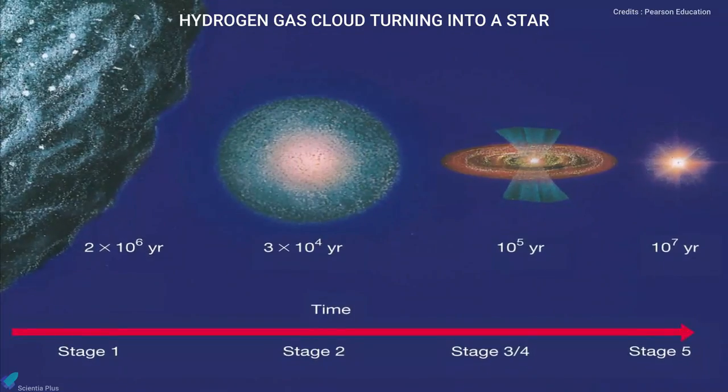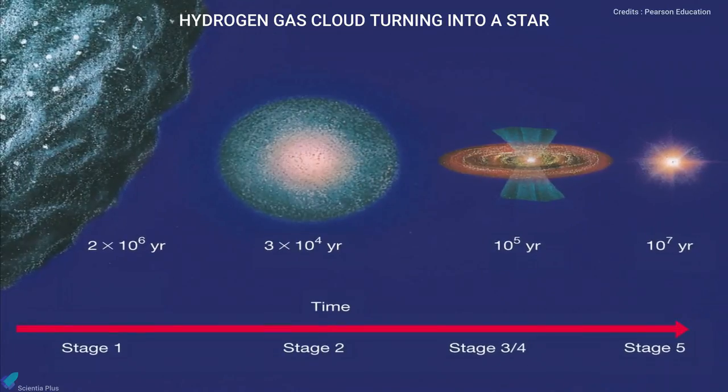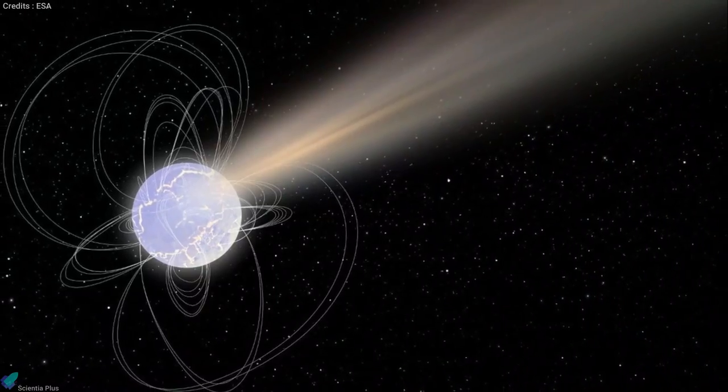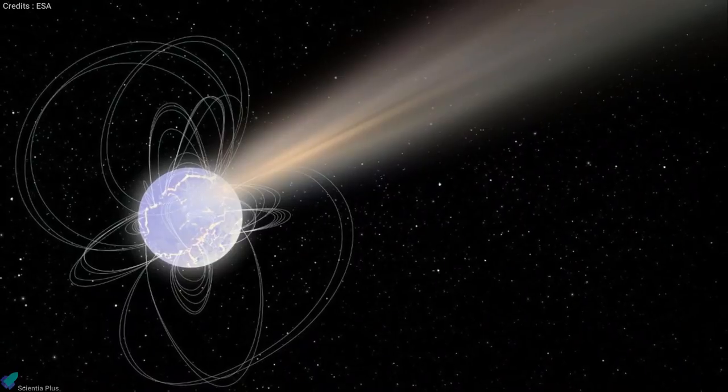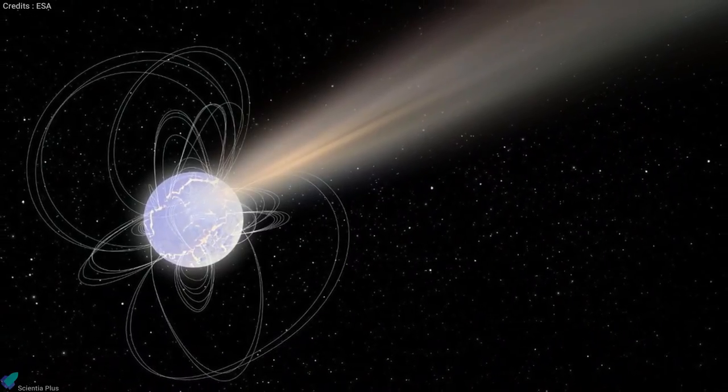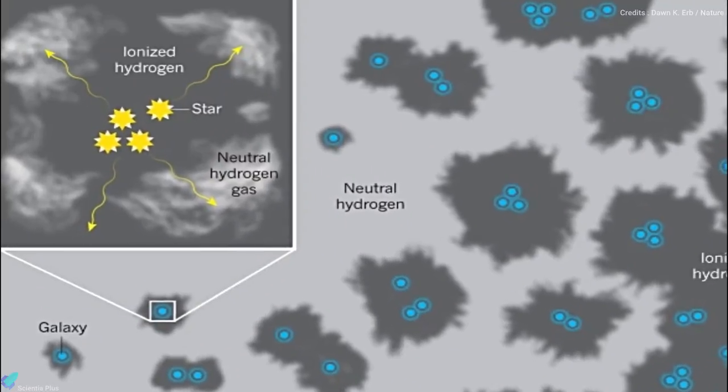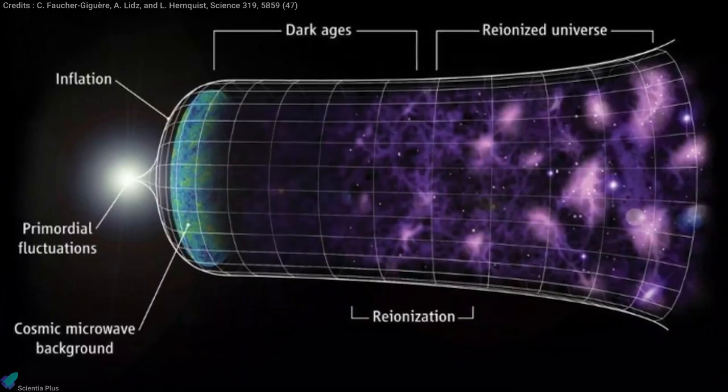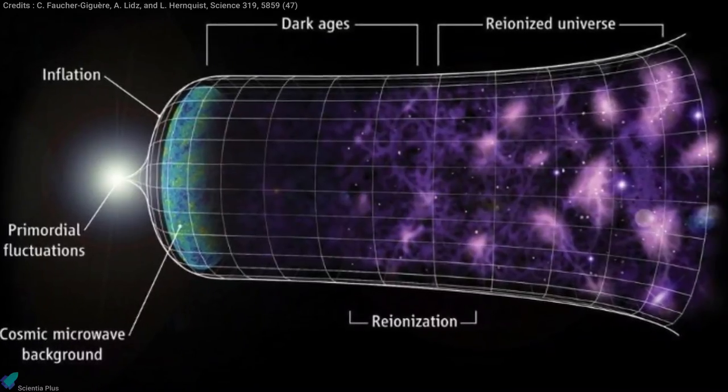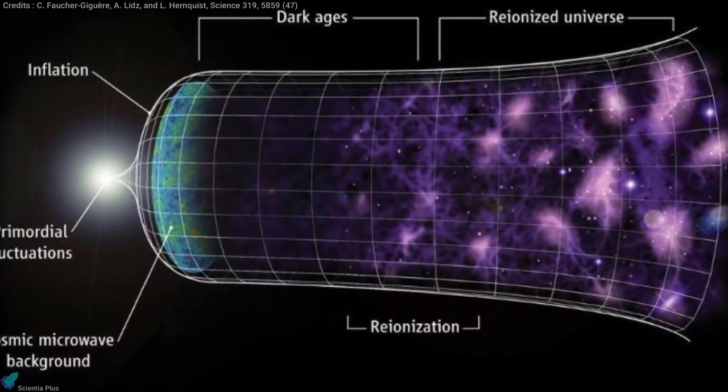Later in this period, hydrogen clumped together to form stars. Many of these early stars were so big and hot, and they produced a lot of ultraviolet radiation. Those UV radiations ate the surrounding hydrogen, breaking the atoms apart and reionizing the universe. That ended the cosmic Dark Ages and began a new era known as the Era of Reionization.